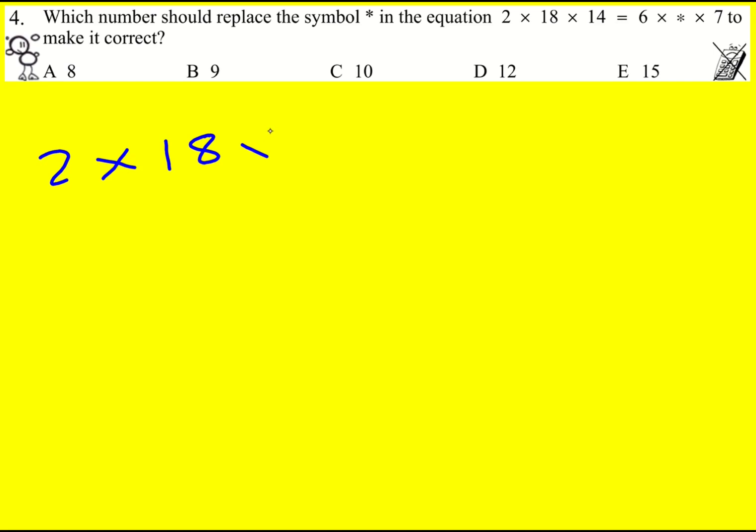I've got 2 times 18 times 14 and I want to write it instead equal to 6 times something times 7 and work out what this something is.